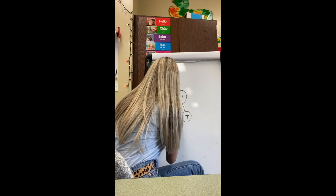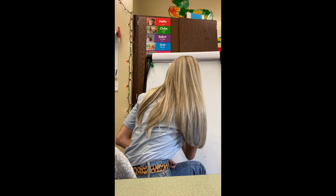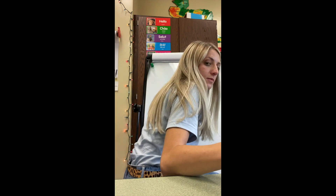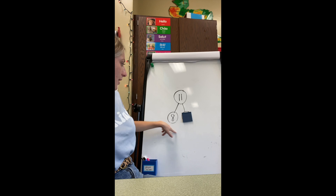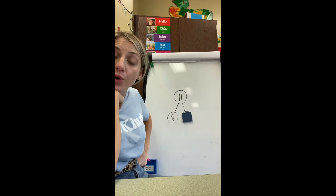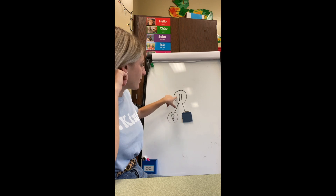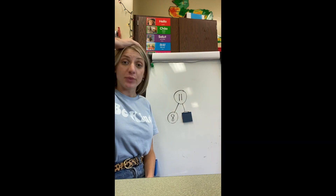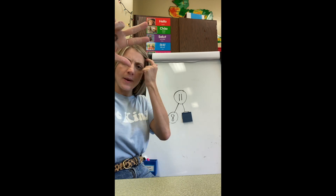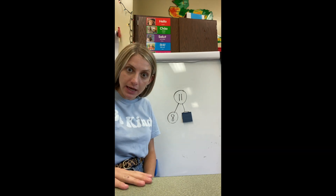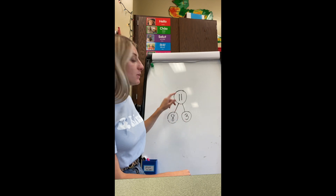Close your eyes. Okay, open. What do we see? A number bond — we have eight and 11. Are we missing the part or the whole? We're missing a part. What do we do if we're missing a part? Count from the part that we have up to the whole. So plant an eight in your brain. Here we go — eight up to 11: eight, nine, 10, 11. What's our missing number? Three. Let's see — drum roll, please. Yes it is! We know that eight plus three equals 11.